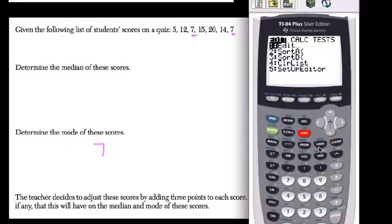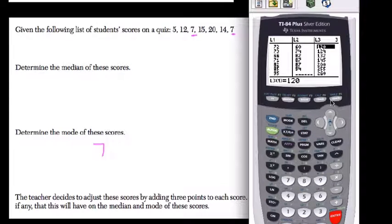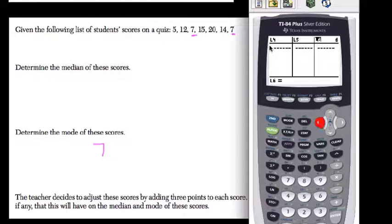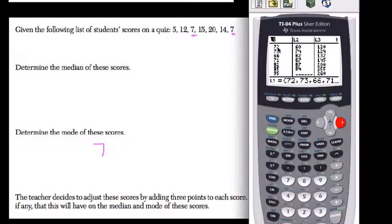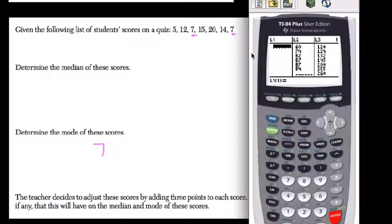I'm going to go to my stat button here and edit my lists. If I have data in the list, I'm going to use list 1. I scroll over until I reach list number 1, and it's highlighted up here. I hit clear and enter. Now I have a new fresh list.